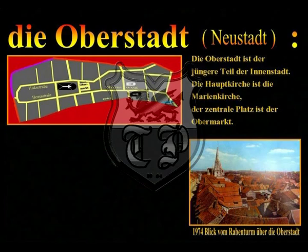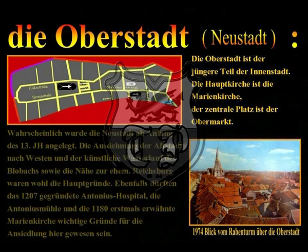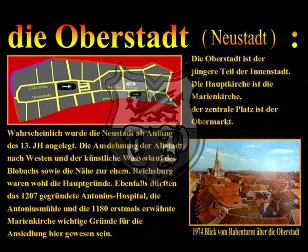Die Oberstadt ist der jüngere Teil der Innenstadt. Die Hauptkirche ist die Marienkirche, der zentrale Platz ist der Obermarkt. Wahrscheinlich wurde die Neustadt ab Anfang des 13. Jahrhunderts angelegt. Die Ausdehnung der Altstadt nach Westen, der künstliche Wasserlauf des Blobachs sowie die Nähe zur ehemaligen Reichsburg waren wohl die Hauptgründe. Ebenfalls dürften das 1207 gegründete Antonius-Hospital, die Antonius-Mühle und die 1180 erstmals erwähnte Marienkirche wichtige Gründe für die Ansiedlung hier gewesen sein.